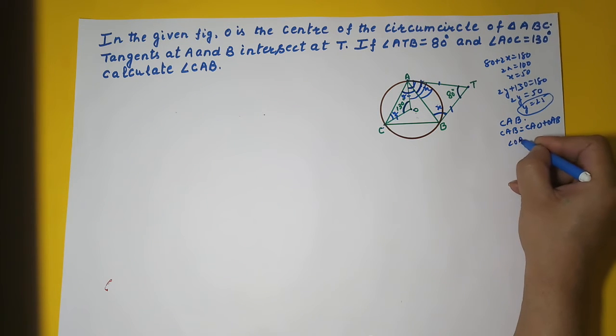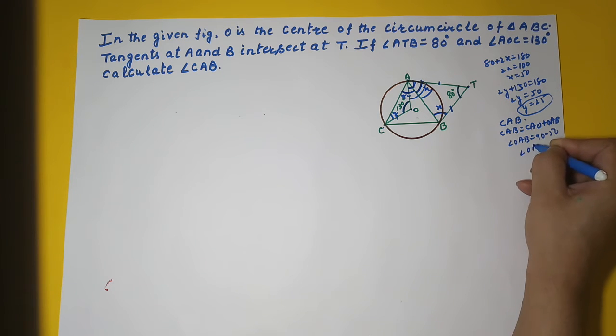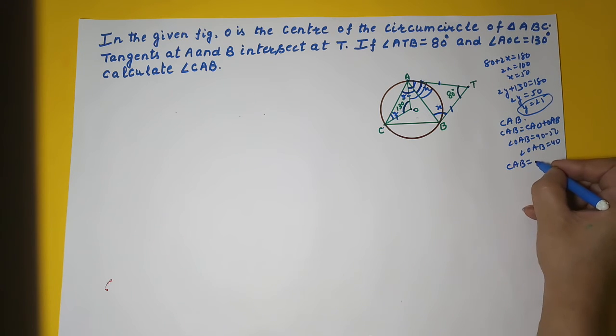So angle OAB will be 90 minus 50, so your OAB will be 40. Now you have got angle CAB which is equal to 40 plus 25, which is 65 degrees.